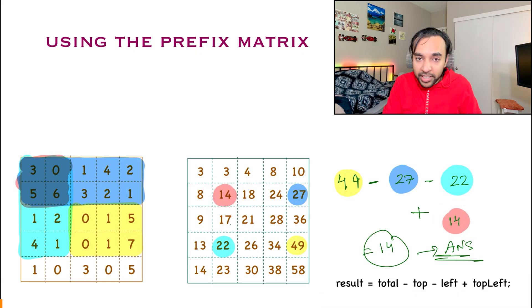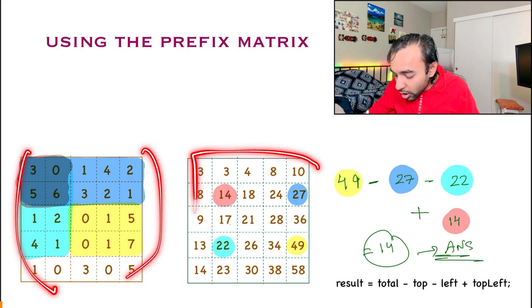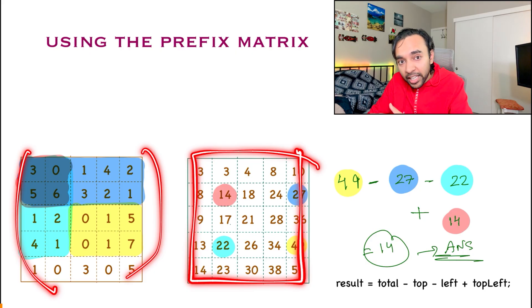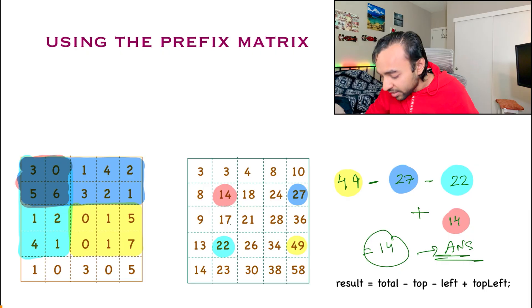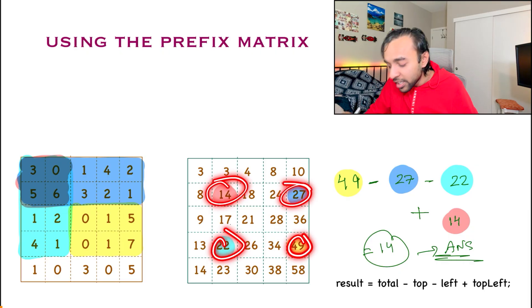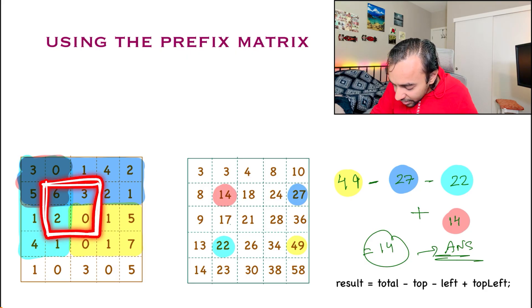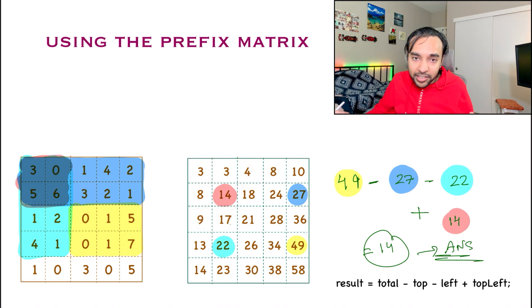Notice we just have one iteration to compute our prefix matrix — order of M×N time — and to make any queries they happen in constant time. I just look at those four values and can tell you the answer. For any other sub-matrix, for example this one, I look at values 21, 4, 3, and 9 — just those four values and I know my answer. Let's quickly do a dry run of the code and see how it works in action.